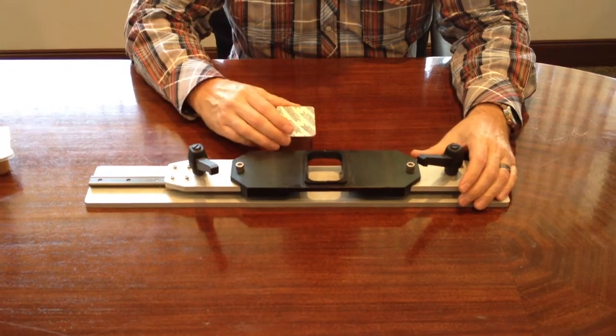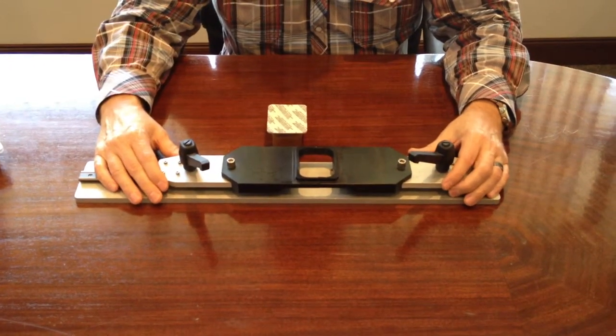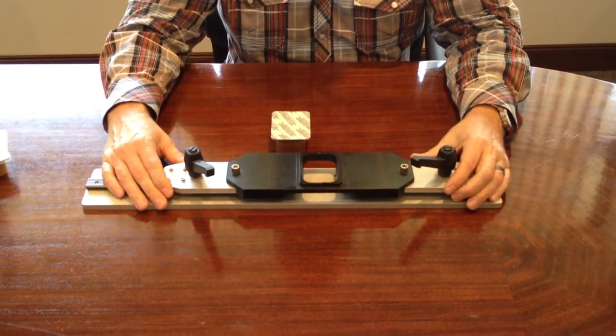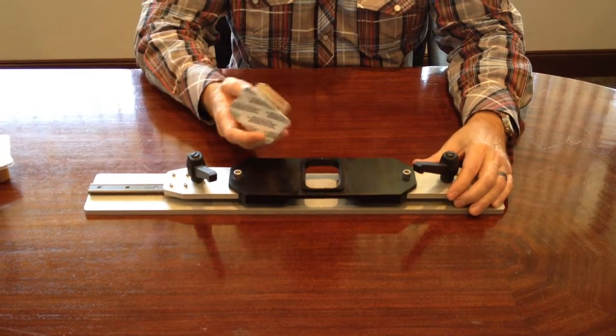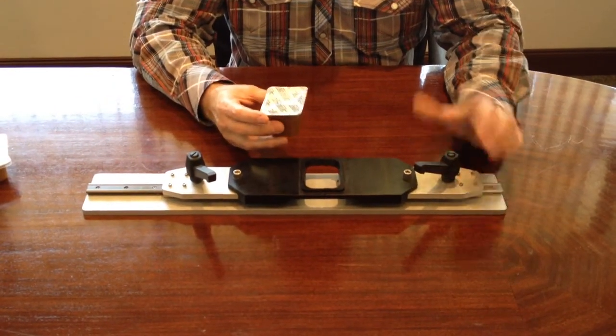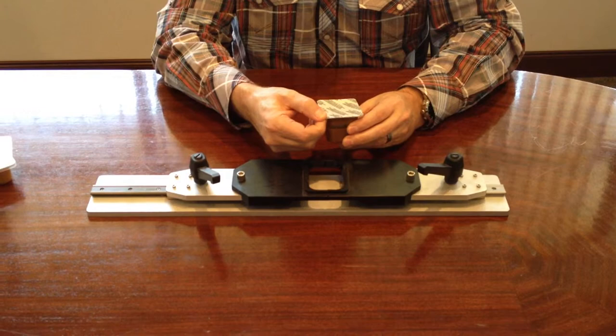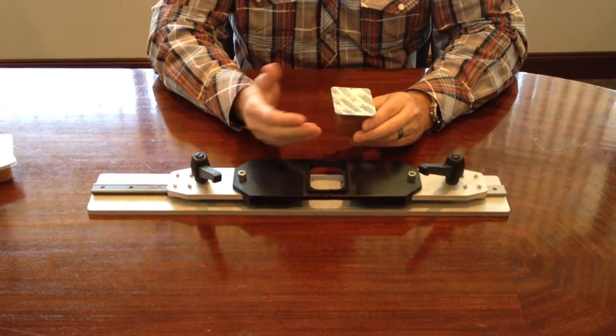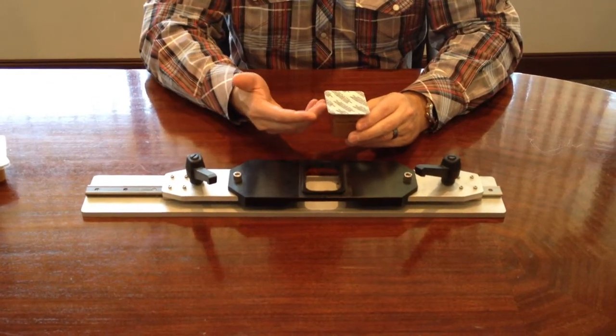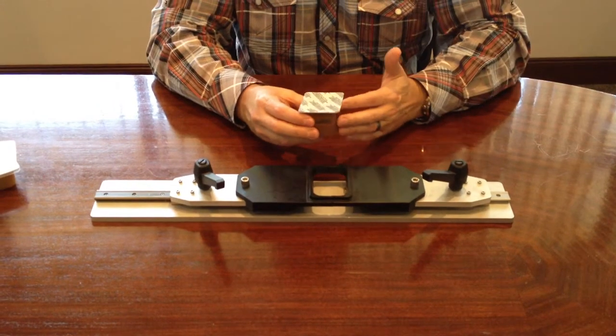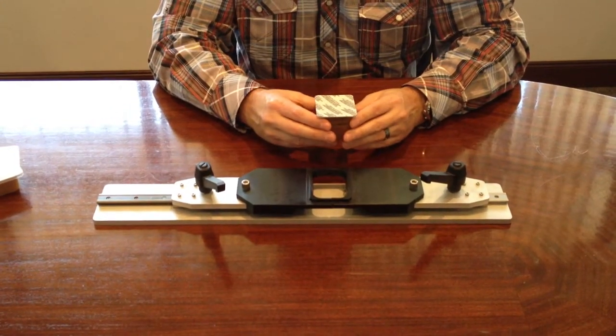This is a test fixture that we built for Gerber's several years ago. Gerber had an over capping application in which they had a very flimsy flange on the container, and we had to support the flange of the container all the way around the circumference.